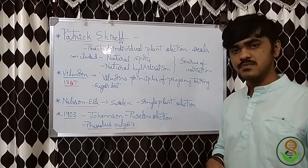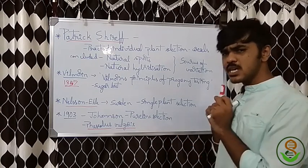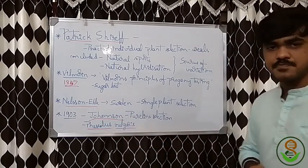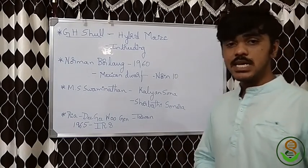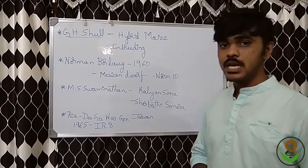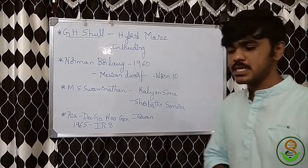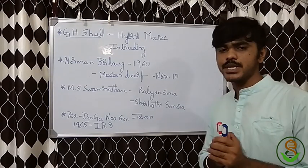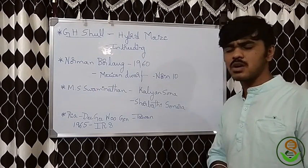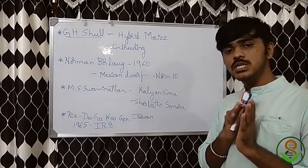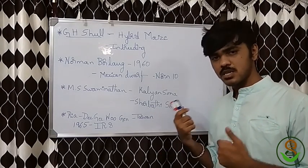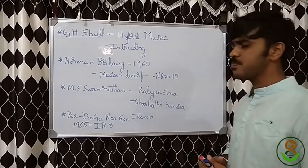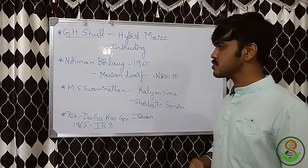Johannsen worked on Phaseolus vulgaris and gave the pure line selection theory — please try to remember his name, it is very important. G.H. Shull was an American who worked on hybrid maize, the most cross-pollinated plant. He gave a detailed explanation of inbreeding in those plants, including the effects of inbreeding depression.